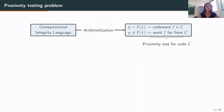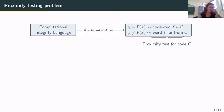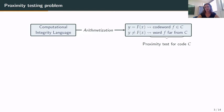Now, proximity testing. The problem is: we have a computational integrity language with some instance and we want to know if it lies in the language. To do this, we use arithmetization — which encodes the running of the computation. This arithmetization transforms the fact that y is the correct result into a codeword of a given code C. And if y is not the right result, arithmetization produces a word f which is far from C. This is why we are led to run proximity tests for a code C.